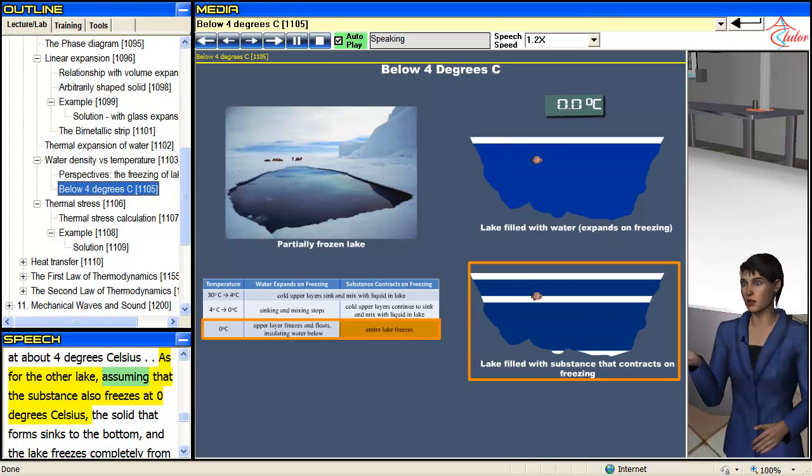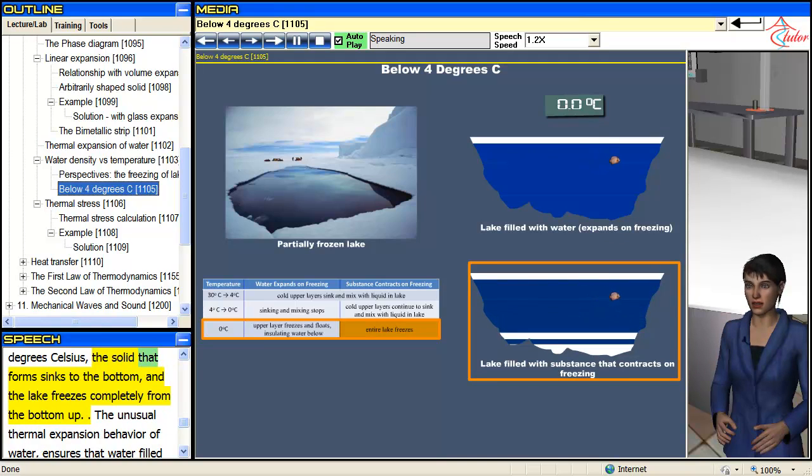As for the other lake, assuming that the substance also freezes at 0 degrees Celsius, the solid that forms sinks to the bottom, and the lake freezes completely from the bottom up.